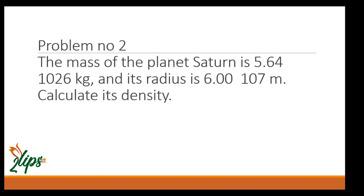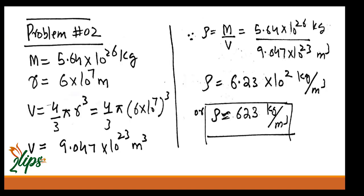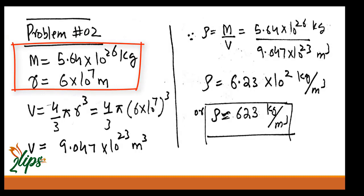Problem number two: the mass of planet Saturn is 5.64 × 10²⁶ kg and its radius is 6 × 10⁷ meters. Calculate its density. The mass and radius are given. Since density equals mass per volume, we need to find the volume.